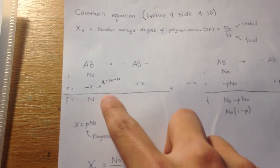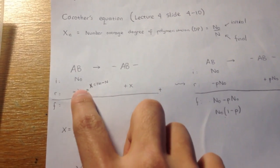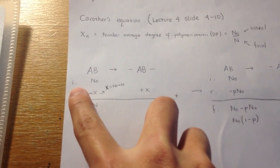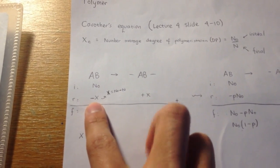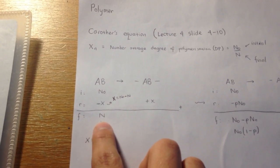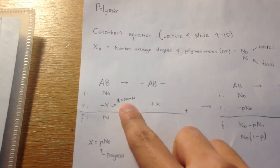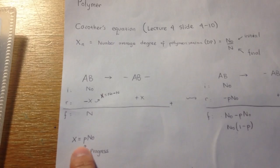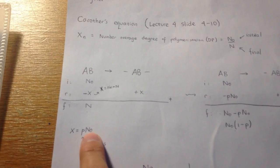So let's consider this case. AB monomer becomes AB polymer. Initial n0, reaction I put minus X, n plus X. Final this is n. So X in this case is n0 minus n.